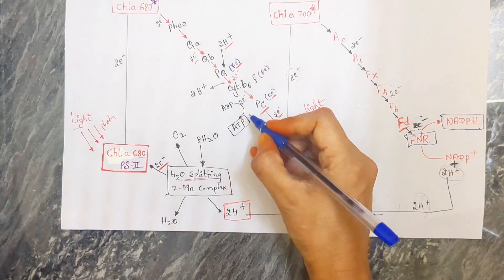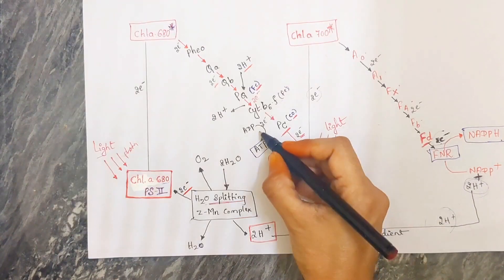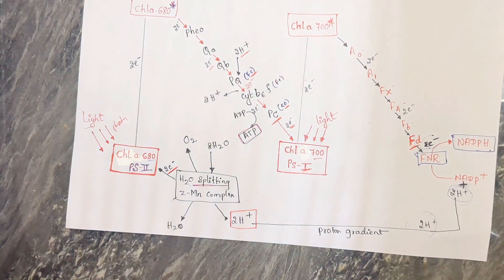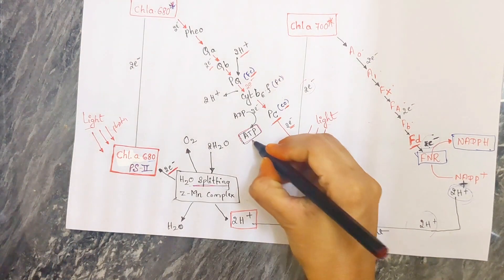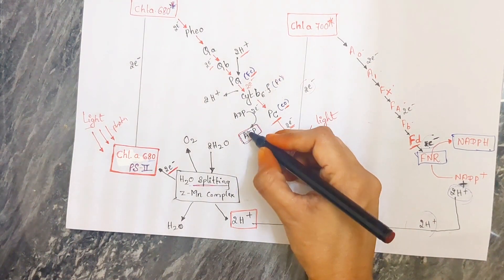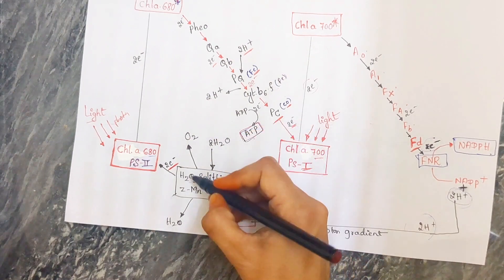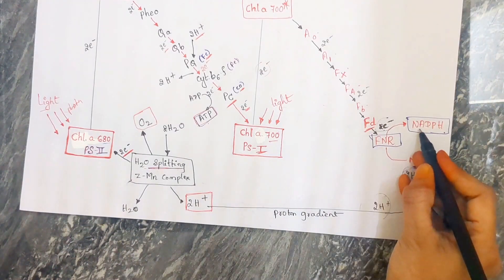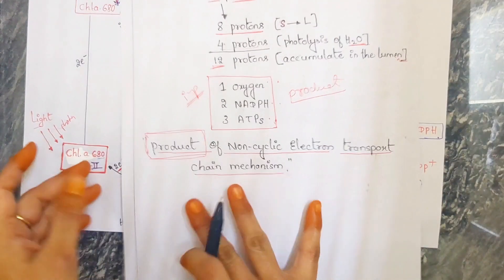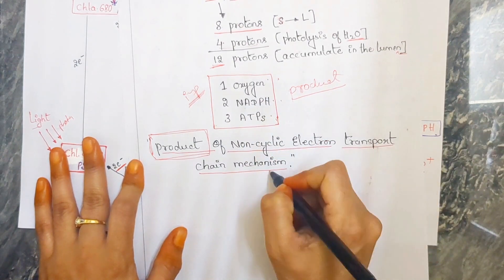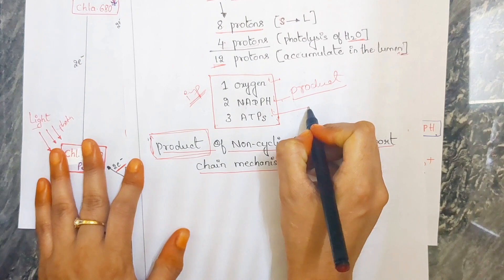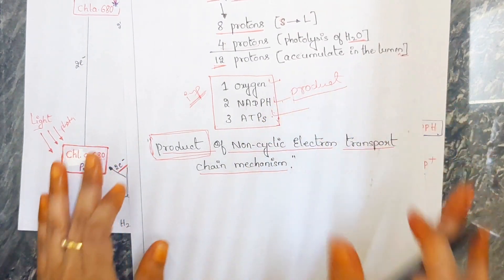Also at cytochrome B6F, ADP plus Pi gives ATP. This is non-cyclic photophosphorylation — here 3 ATPs are produced. By splitting up of water, you also get oxygen and NADPH. So the end products of the non-cyclic electron transport system are 1 oxygen, 2 NADPH, and 3 ATPs — which is very important to remember.